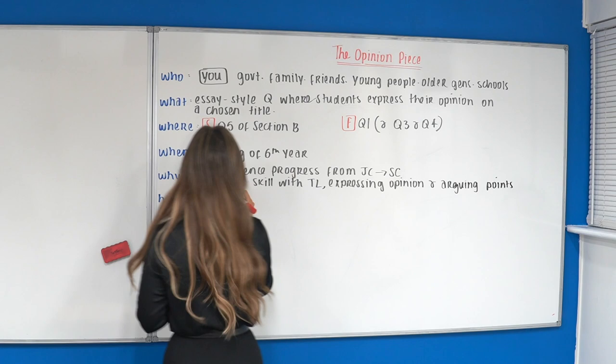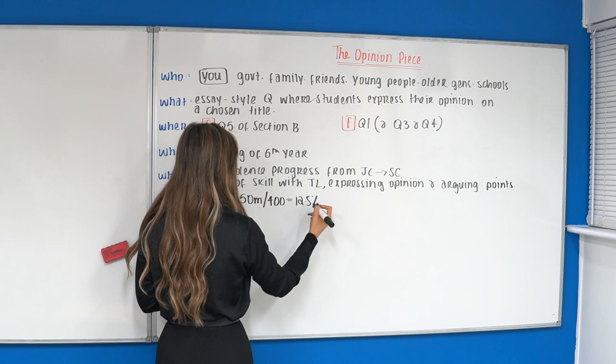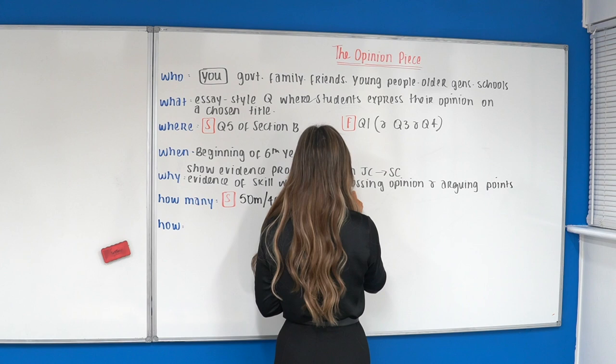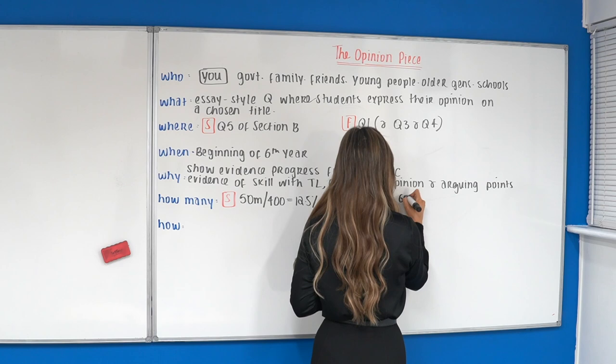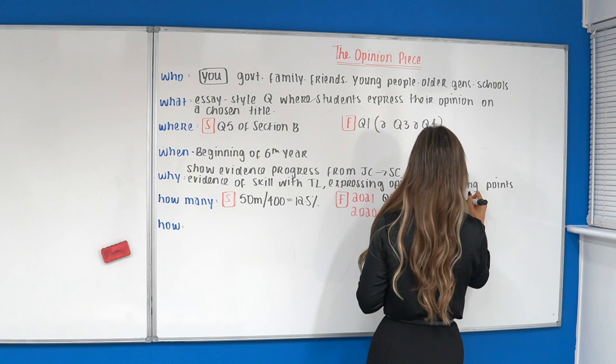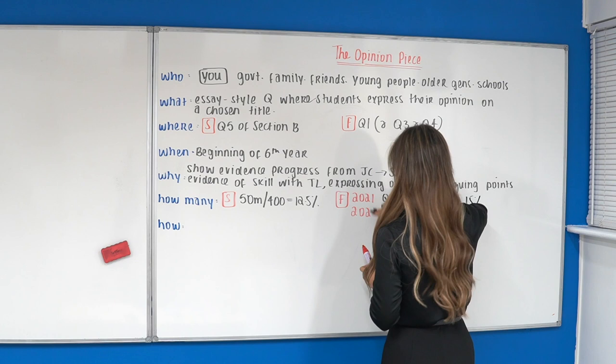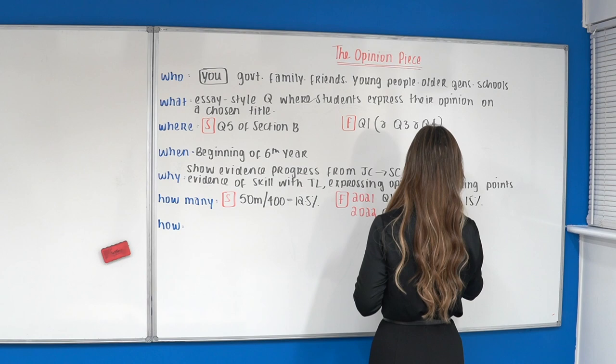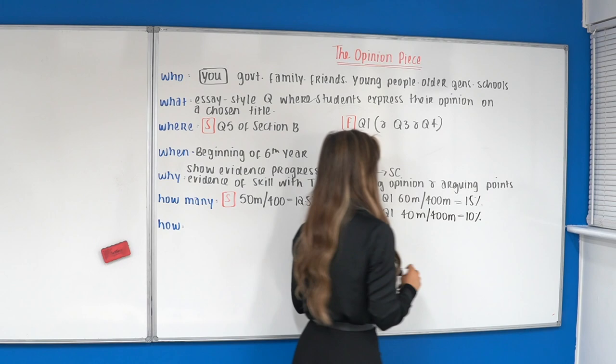How many marks is it going to be worth? So let's break this up into our two languages first. Spanish is going to be 50 marks out of a total of 400. So your opinion piece is going to be worth 12 and a half percent, which means it's going to be worth the same as half of your oral exam. And then for French, for 2021, your question one is going to be worth 60 marks out of 400, which is 15%. And then your question one usually, so if you do this any later than 2021, we have 40 marks out of 400, which is 10%. And then your questions three and four will be worth less marks. But this is our main focus for this, is our question one.